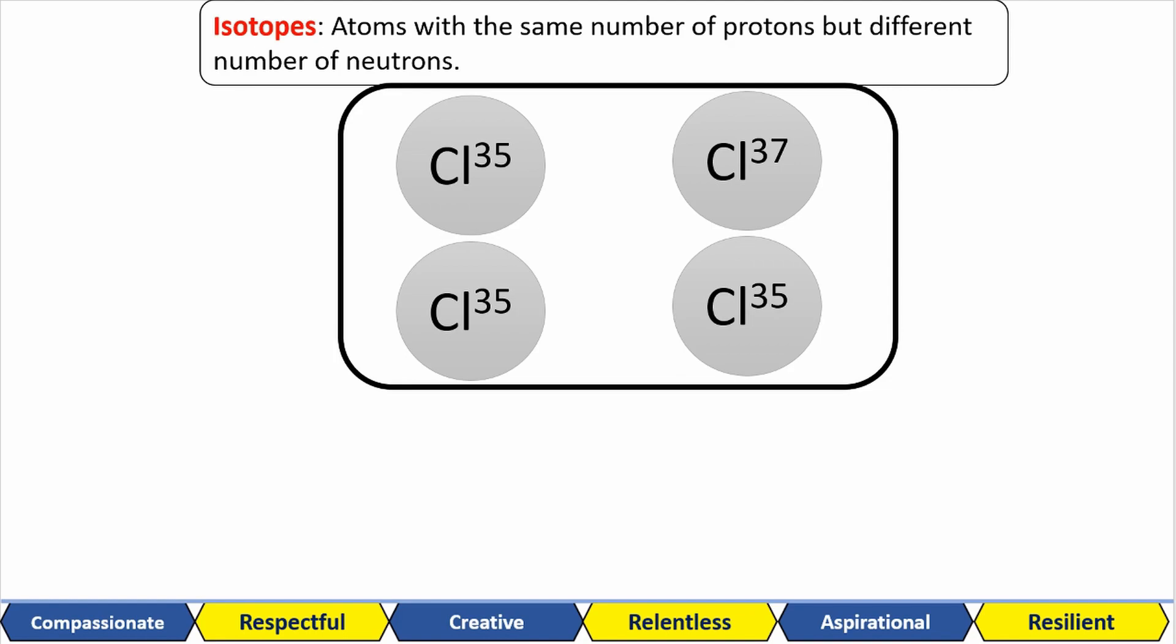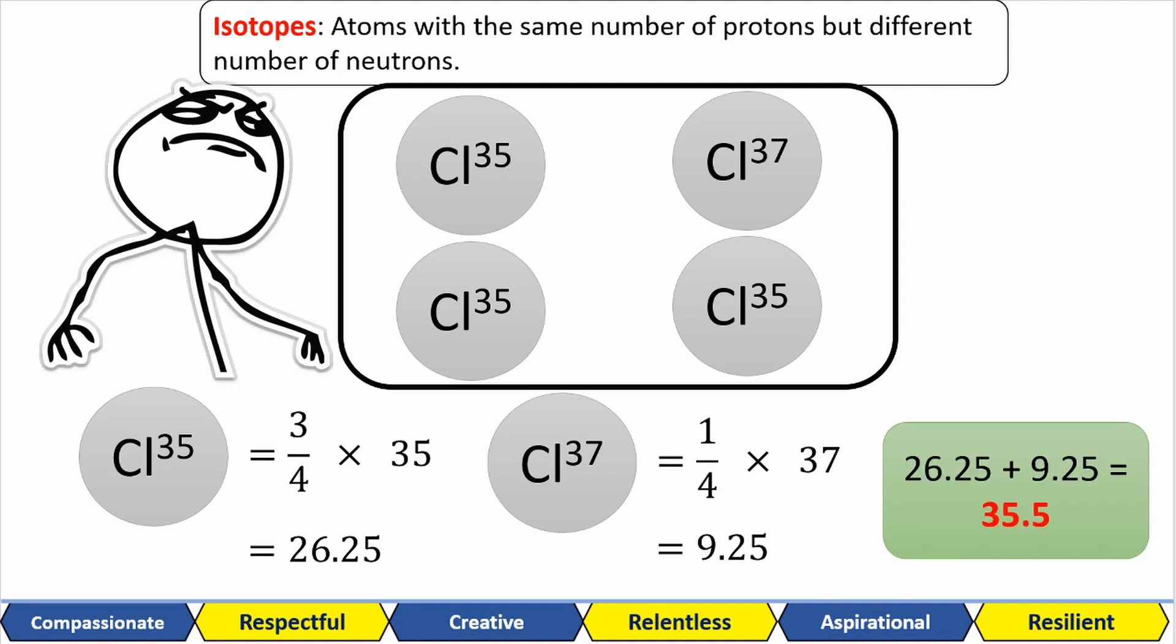Doing the calculations we see that the chlorine with the 35 ram is 3 over 4 times 35. That gives us 26.25 as our mass. The chlorine that is 37 is 1 over 4 times 37. That means that chlorine isotope contributes a mass of 9.25. Then we just sum our masses together and that gives us 35.5. That's why you have some elements with 0.5's or decimals in the relative atomic masses.